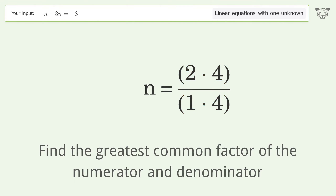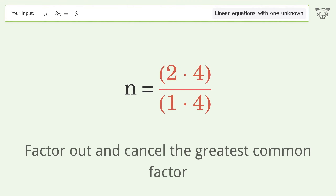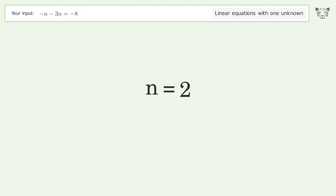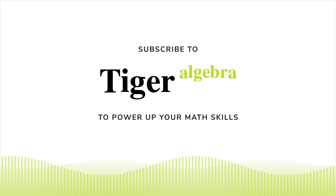Find the greatest common factor of the numerator and denominator, then factor out and cancel the greatest common factor. And so the final result is n equals 2.